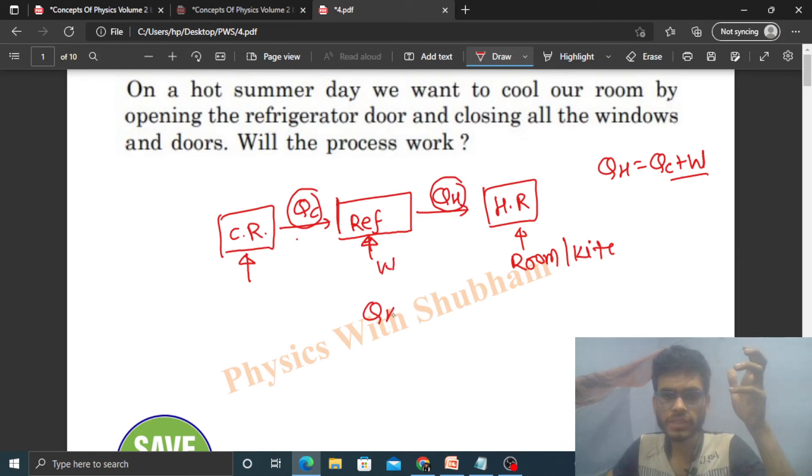And of course, QH is greater than QC. So you can see that when we keep the refrigerator door open, the heat absorbed by the refrigerator will be less than the heat supplied by the refrigerator to the kitchen or room.